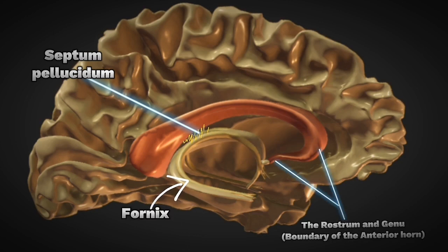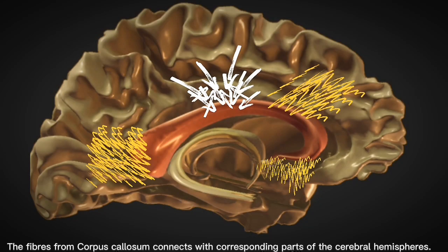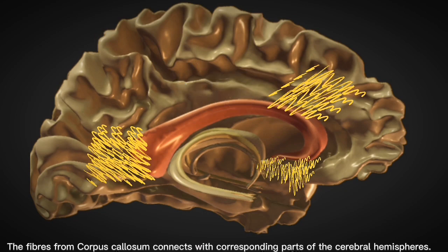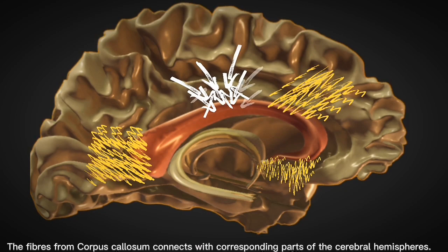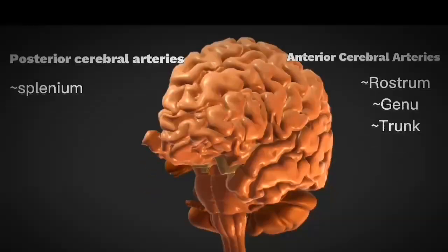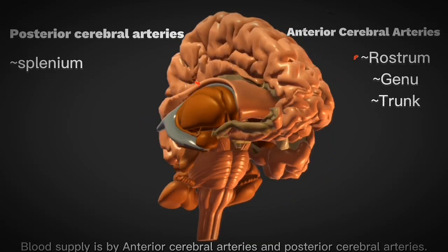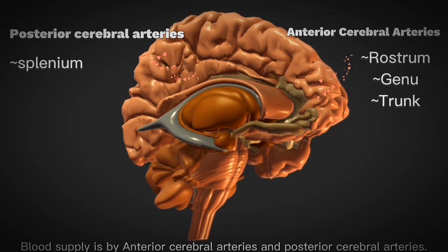The rostrum and genu form the boundary of the anterior horn, while the trunk forms the roof of the central part of the lateral ventricle. The fibers from the corpus callosum connect with corresponding parts of the cerebral hemispheres. Blood supply is by the anterior cerebral arteries and posterior cerebral arteries.